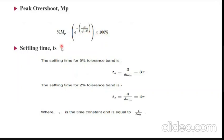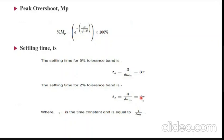The settling time can be measured for 2% or 5% tolerable error. For 5% error: Ts = 3 / (ψ·ωn). For 2% error: Ts = 4 / (ψ·ωn). Here, 1 / (ψ·ωn) is the time constant T, so these can be written as 3T and 4T respectively.